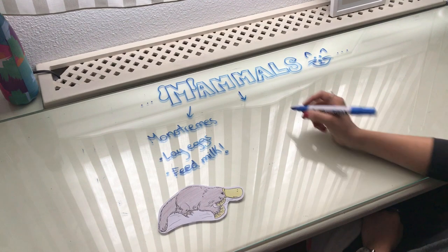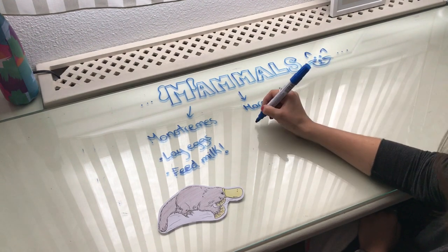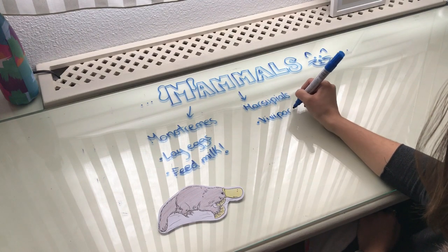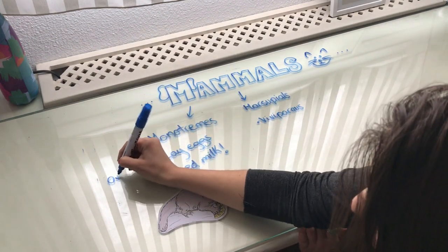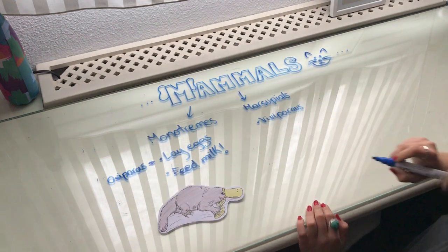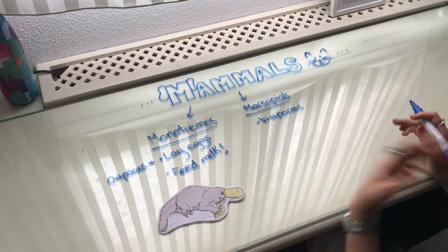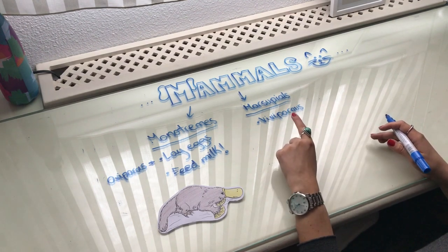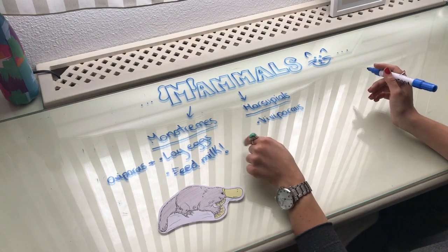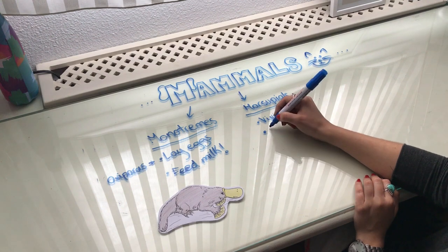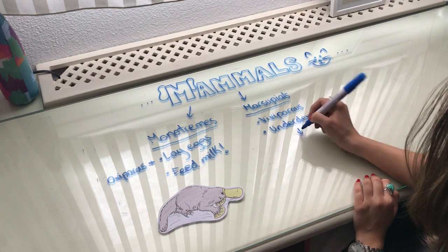The other group of mammals is called marsupials. Marsupials are viviparous. Monotremes, if they lay eggs, are oviparous, remember. So marsupials are viviparous but their offspring — their babies — are born underdeveloped. That means that when they are born they are not ready to survive and live outside. So what do they do? They are transferred to a pouch. So they are born underdeveloped, and they go into a pouch.